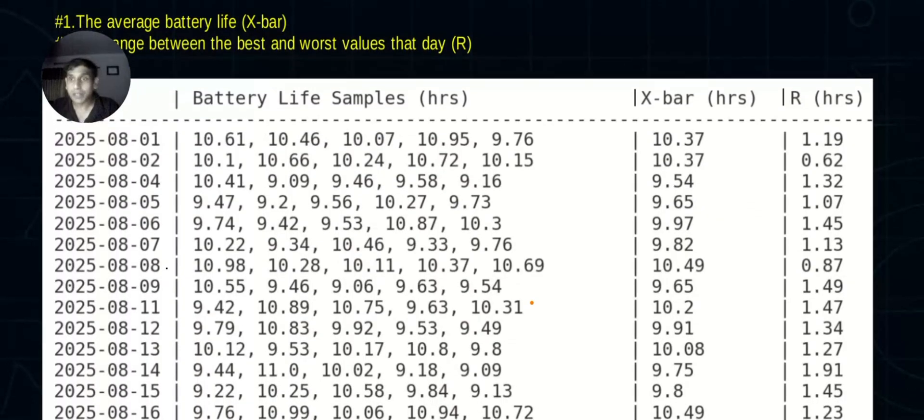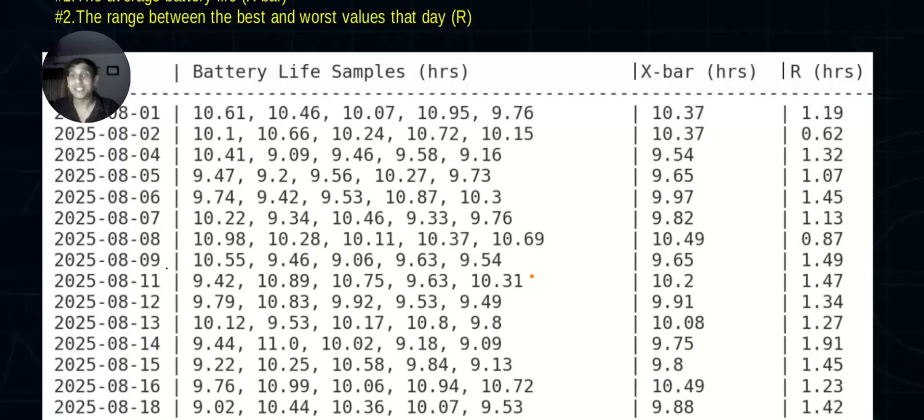What you do is select a sample - maybe two, three, four, or five batteries. In this example, the QA team selects five batteries produced randomly every day. You're the statistics expert, so you're going to measure two things: the average battery life of those five batteries and the range. I've given you the data from August 1st to August 18th. On day one, they selected five batteries and tested them: 10.61 hours, 10.46, 10.07, 10.95, 9.76. Your job is to find the average: 10.37.